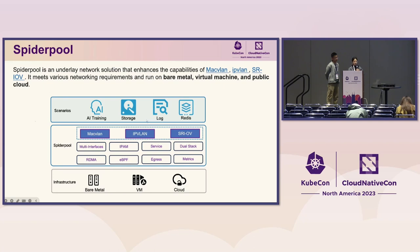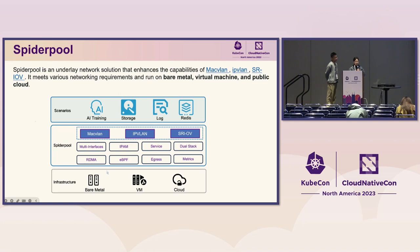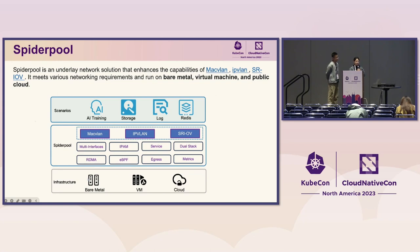That's why we published the project SpiderPool. SpiderPool can run on bare metal, VM, and cloud, and it supports scenarios such as AI training, storage traffic acceleration, log traffic acceleration, and can speed up the performance of Redis and other middleware. SpiderPool can work with MacVLAN, IPvlan, SR-IOV CNI, and has features including smart interface management for pods, efficient IPAM mechanism for large-scale cases, dual stack support, and it can work with RDMA and eBPF. There is also a new feature: egress gateway, which we'll talk about in the next session.